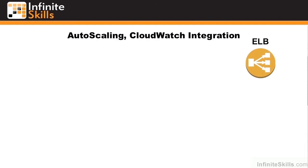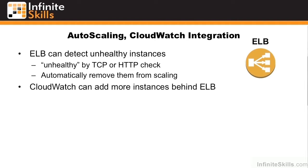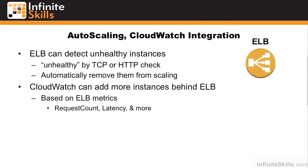Let's take a moment to look at the autoscaling and CloudWatch integration. ELB can detect unhealthy instances — unhealthy is determined by either a TCP or HTTP check. You could put up a web page that the ELB checks to see if an instance is up, and then automatically remove unhealthy instances from scaling. CloudWatch can add more instances behind the ELB based on ELB metrics such as request count and latency, or based on instance metrics such as CPU, IO, or custom metrics.